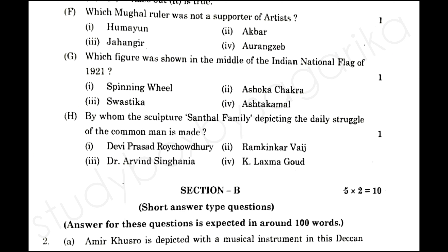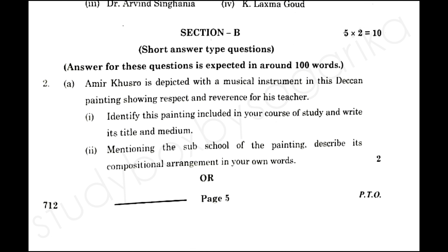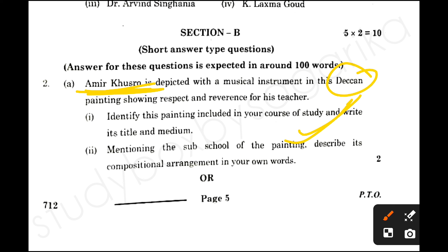Next: by whom was the sculpture 'Santhal Family' made? The answer is Ram Kinkar — I have mentioned this in your notes. Now let's go to Section B and C. You had to tell about Amir Khushru's painting — give the description. If you have both names — Amir Khushru and Amir Khushru — you should not cut your name, as you have both names. The rest you had to tell everything.